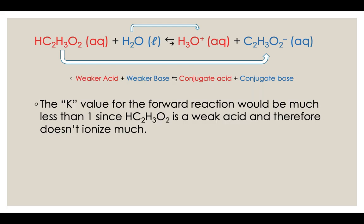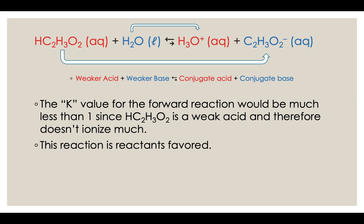In this reaction, the arrow drawn is bigger to the left and just a small arrow to the right. The K value in this reaction would be much less than 1 — a fraction, not a negative number, but a fraction — because acetic acid is weak and therefore doesn't ionize very much. This reaction is reactants favored. Most acetic acid would stay together as molecules and not ionize into H3O+ and acetate ions.